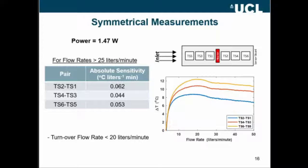is 0.062, 0.044, basically around an average 0.05 degrees Celsius over liters per minute, which is not that great, and it doesn't follow any particular pattern.